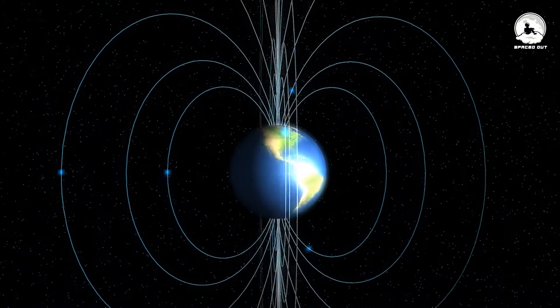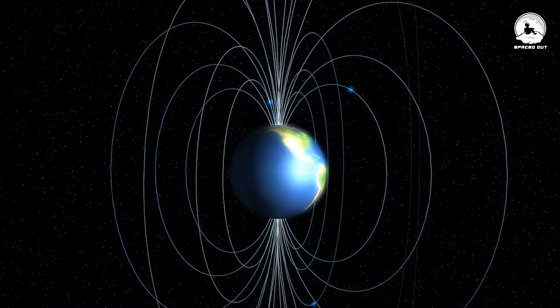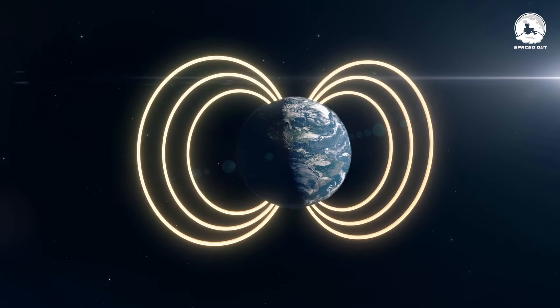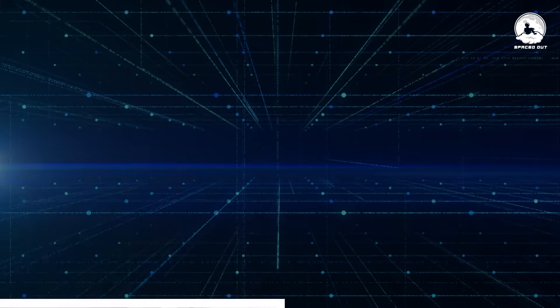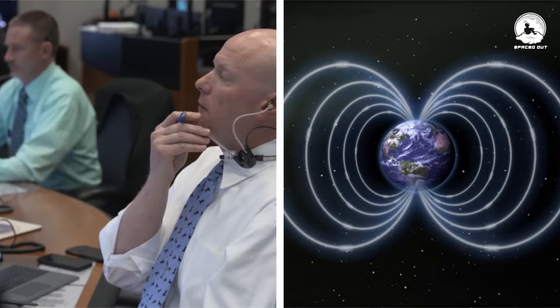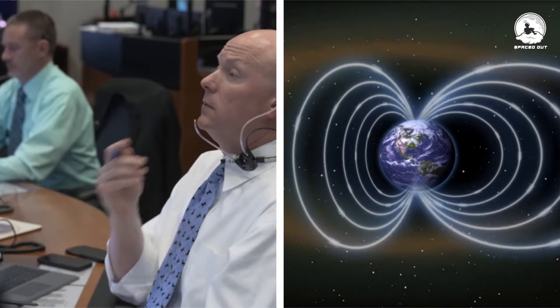Earth's magnetic poles are undergoing a sudden and unprecedented reversal. It's a phenomenon that occurs over geological timescales, but recent observations suggest that the process is accelerating at an alarming rate.